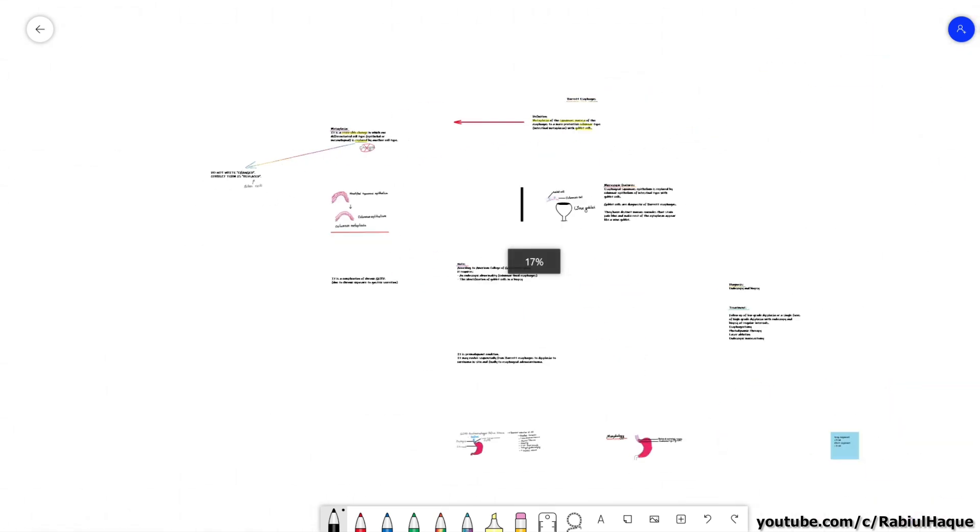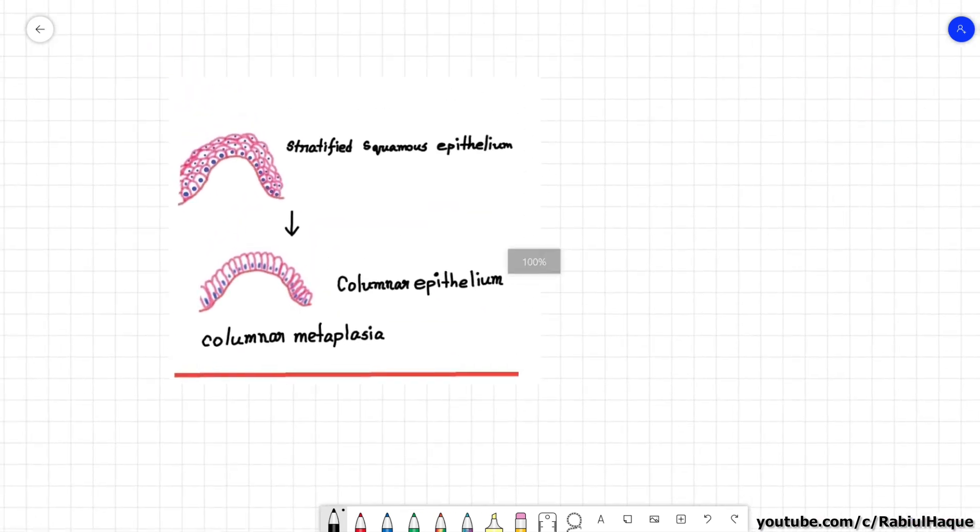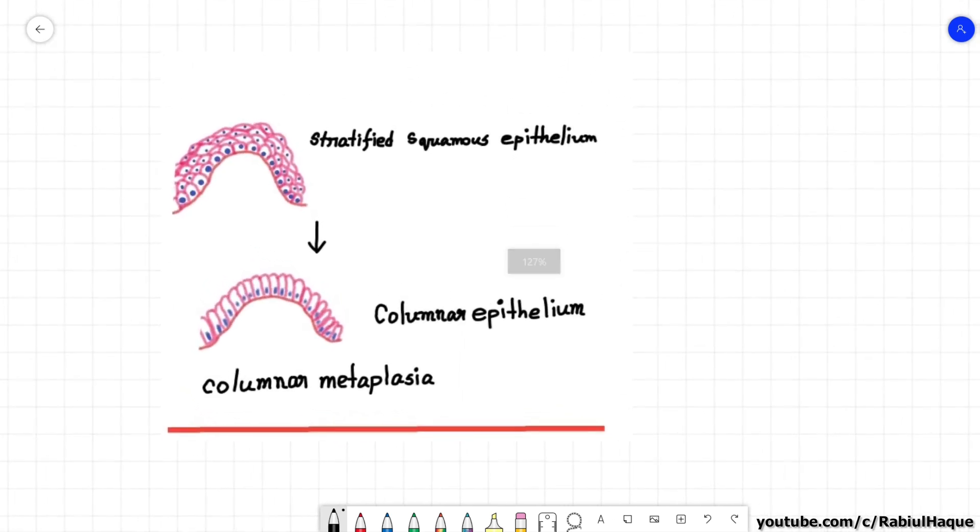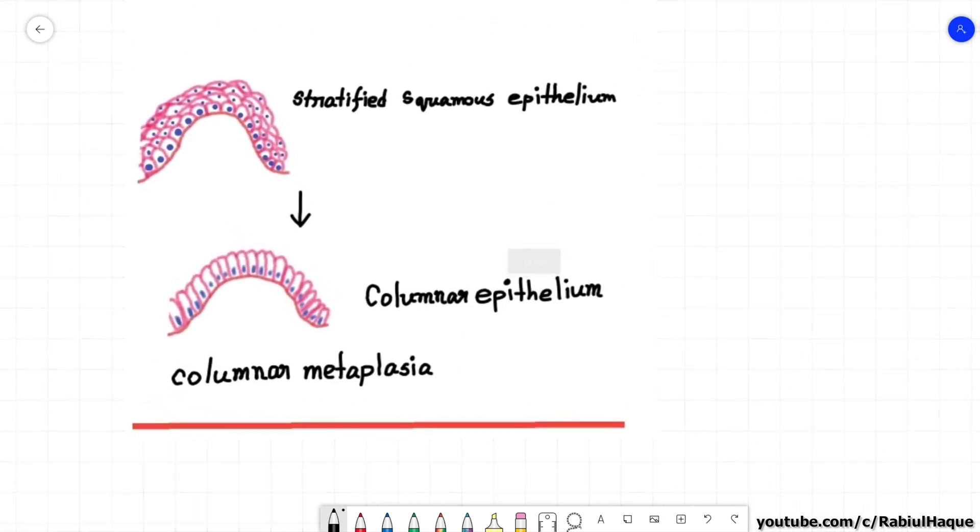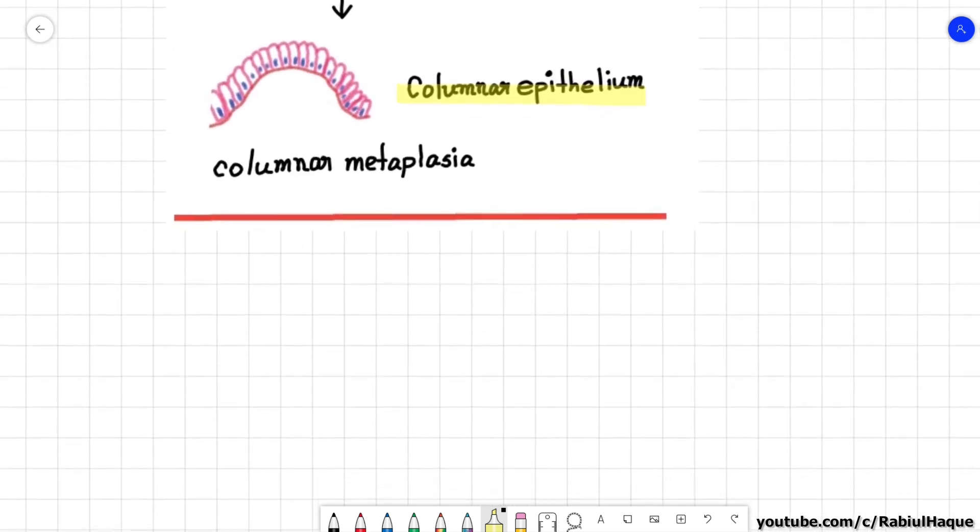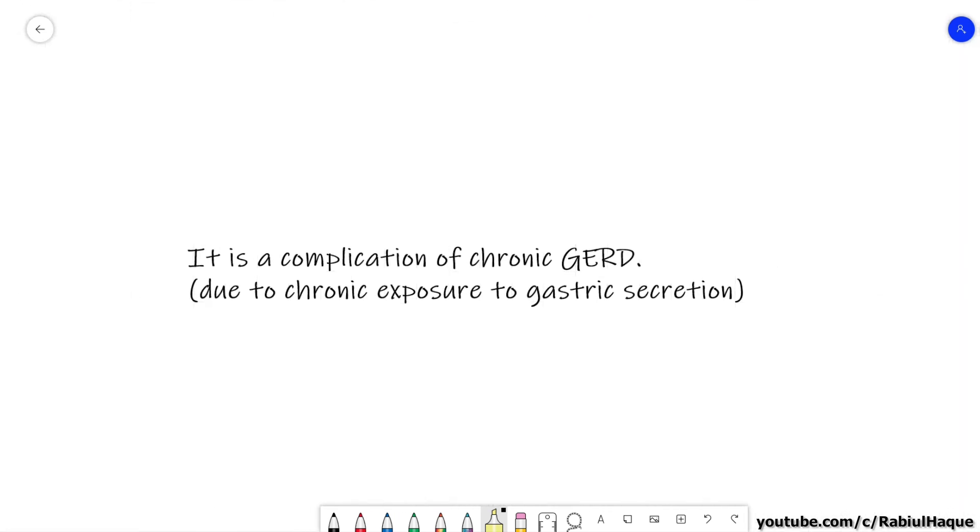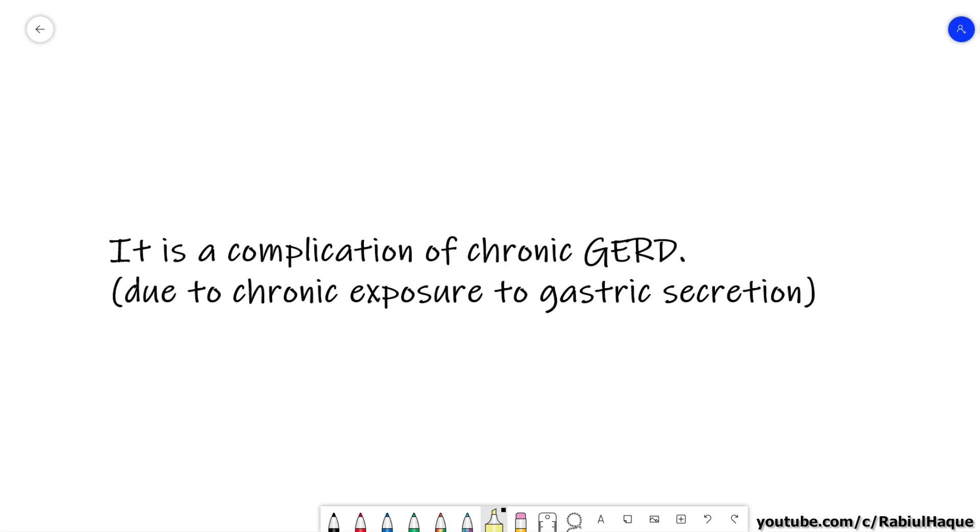Now one type of cell is replaced by another type of cell. So that is metaplasia and Barrett esophagus is also an example of metaplasia. And what is happening here? The normal lining epithelium of our esophagus, which is stratified squamous epithelium, that is getting replaced by columnar type of cells and there is also presence of goblet cells.